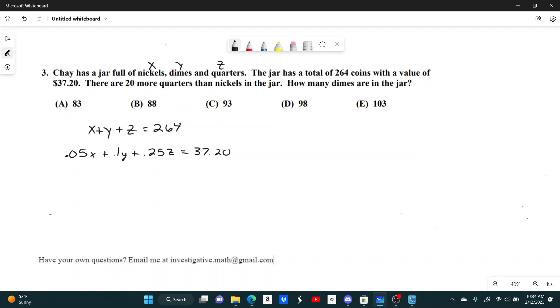There are 20 more quarters than nickels in the jar. So if you take the number of nickels and add 20, you get the number of quarters. Or, an easier way of seeing it,